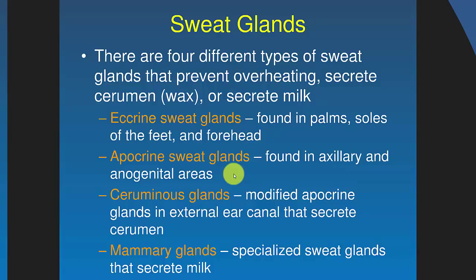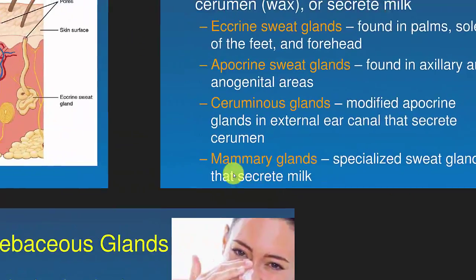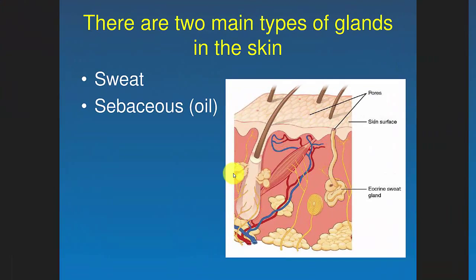Ceruminous glands are a type of apocrine sweat gland that tend to secrete wax — think about earwax. Mammary glands are also a type of sweat gland. Then you have sebaceous glands, the oil glands, which secrete an oily secretion called sebum. In the diagram, the sweat gland is here, and the glands around hair follicles are the sebaceous glands.